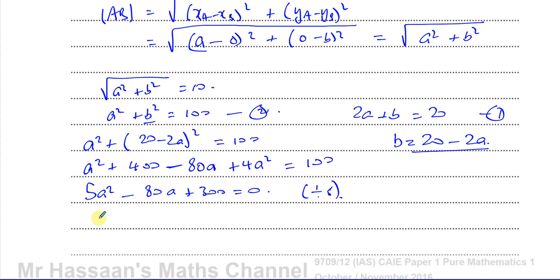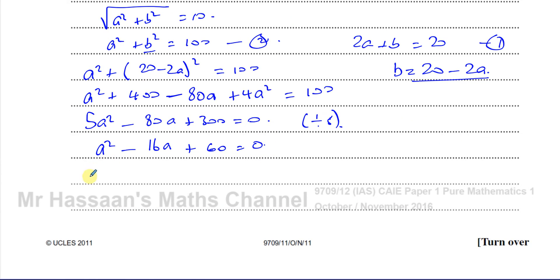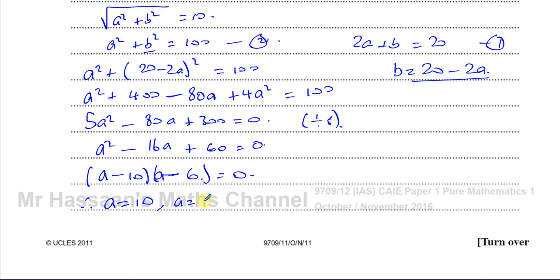Dividing through by 5 gives a² − 16a + 60 = 0. Factorising: (a − 10)(a − 6) = 0. Therefore a = 10 or a = 6.